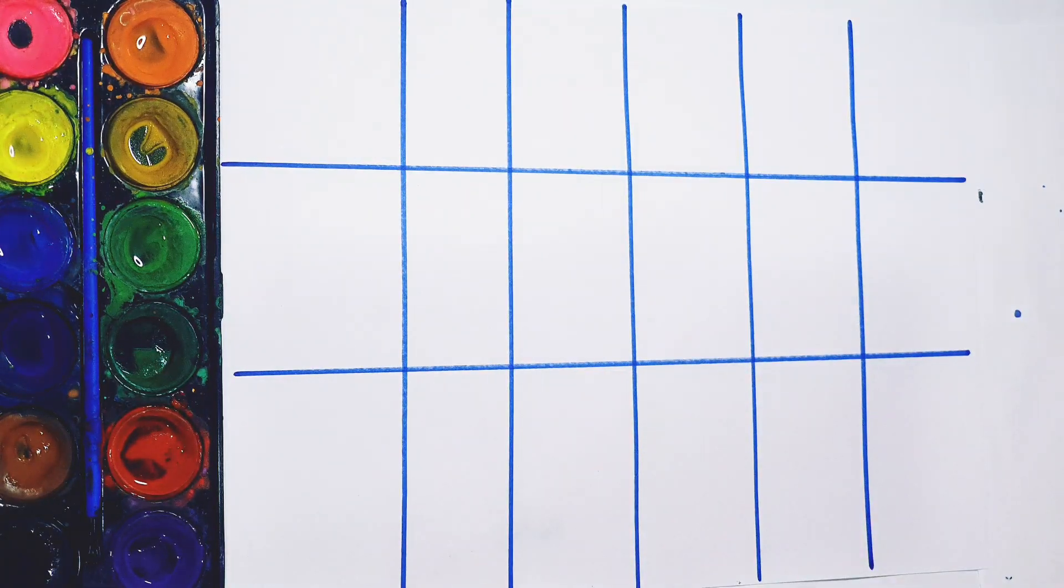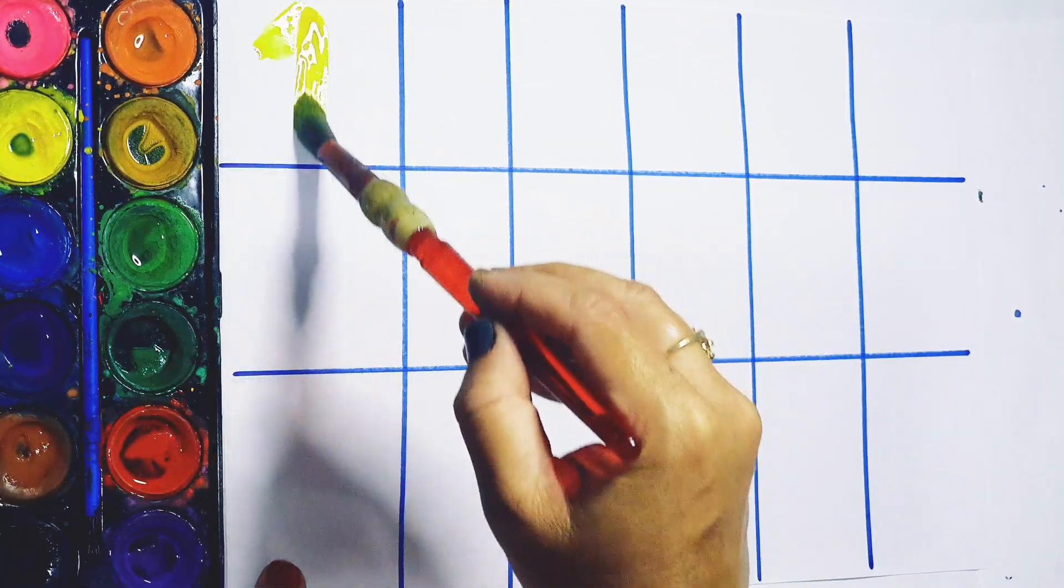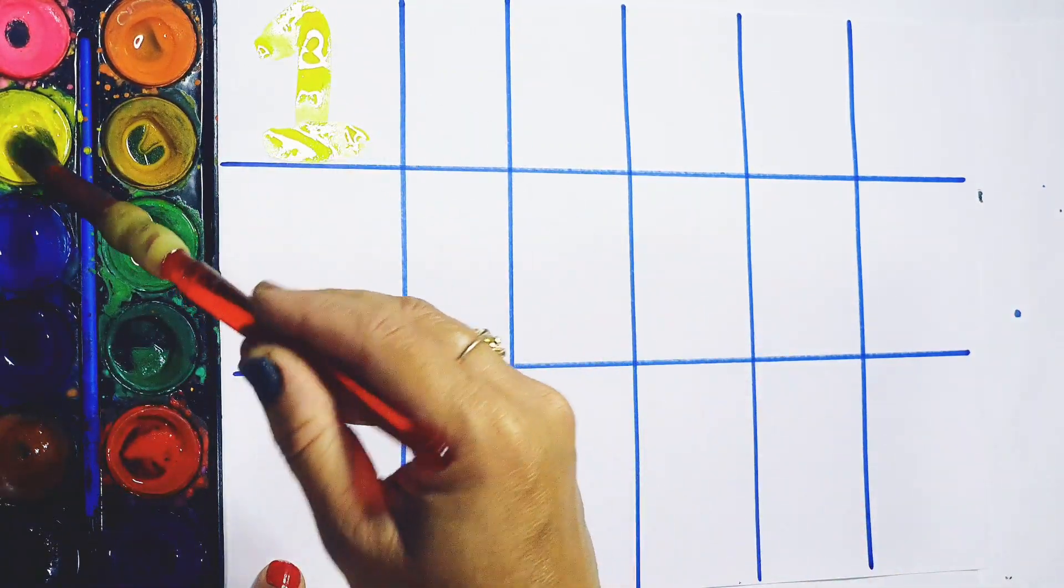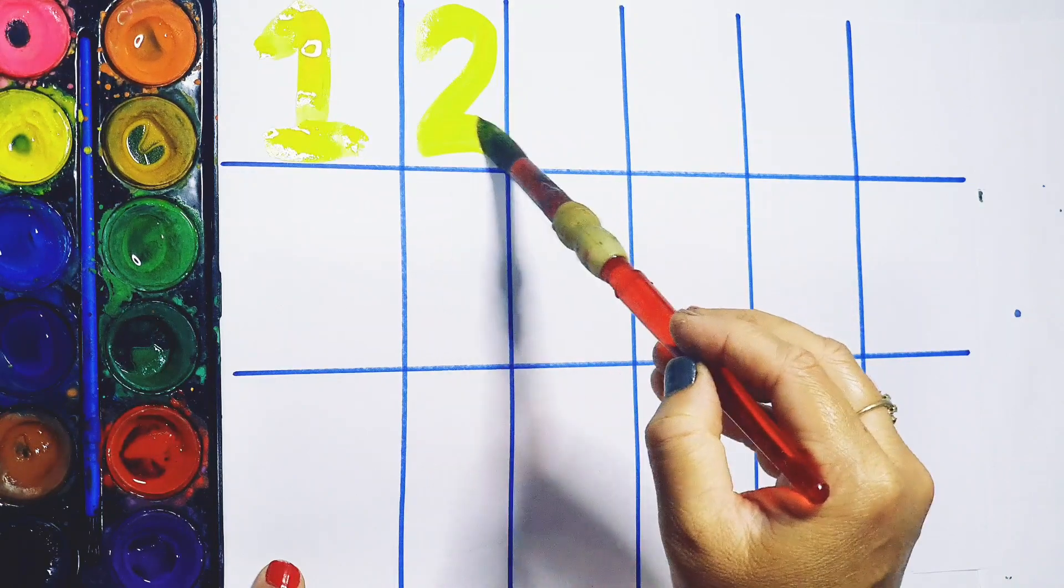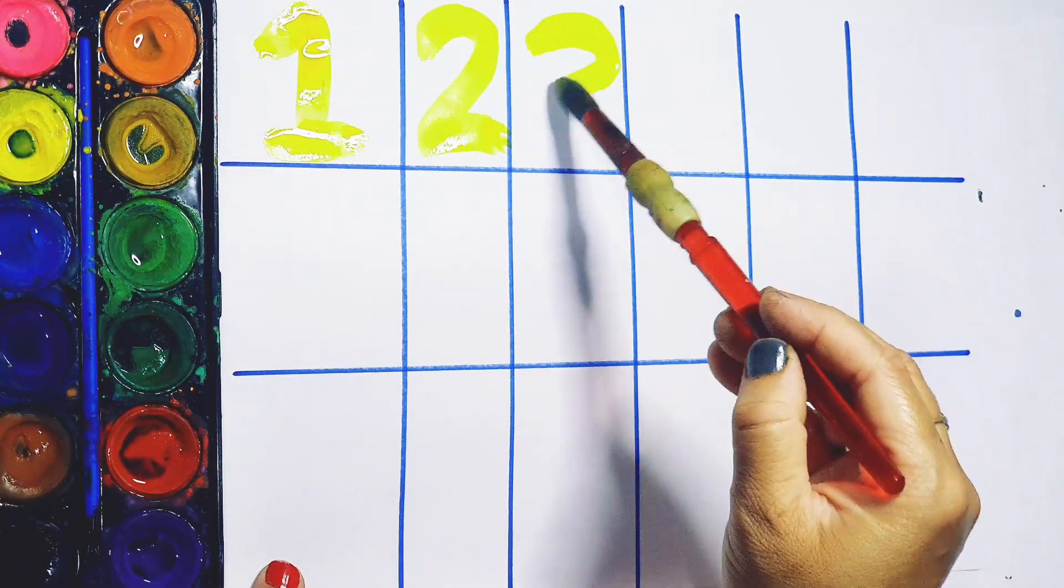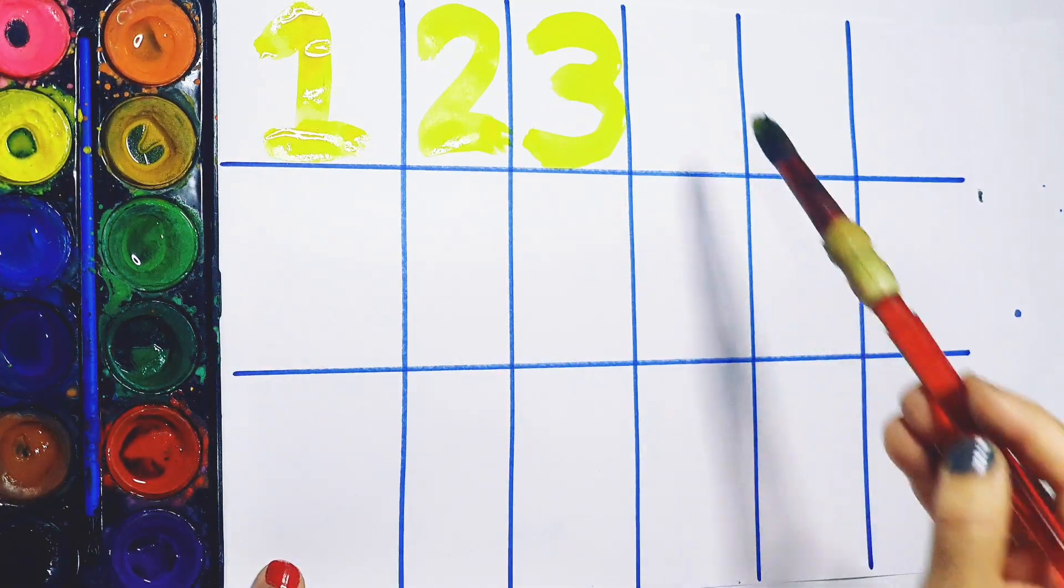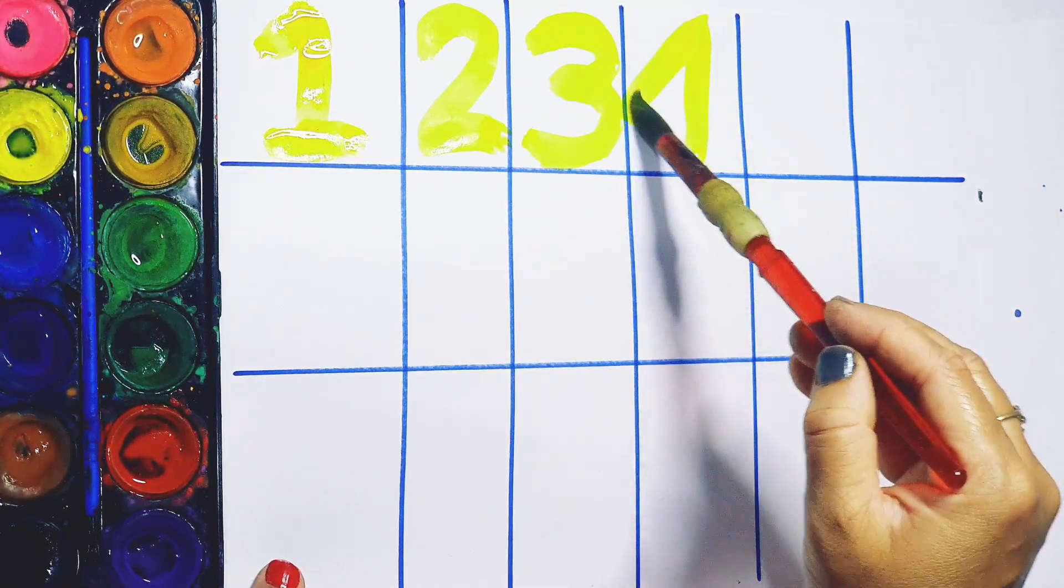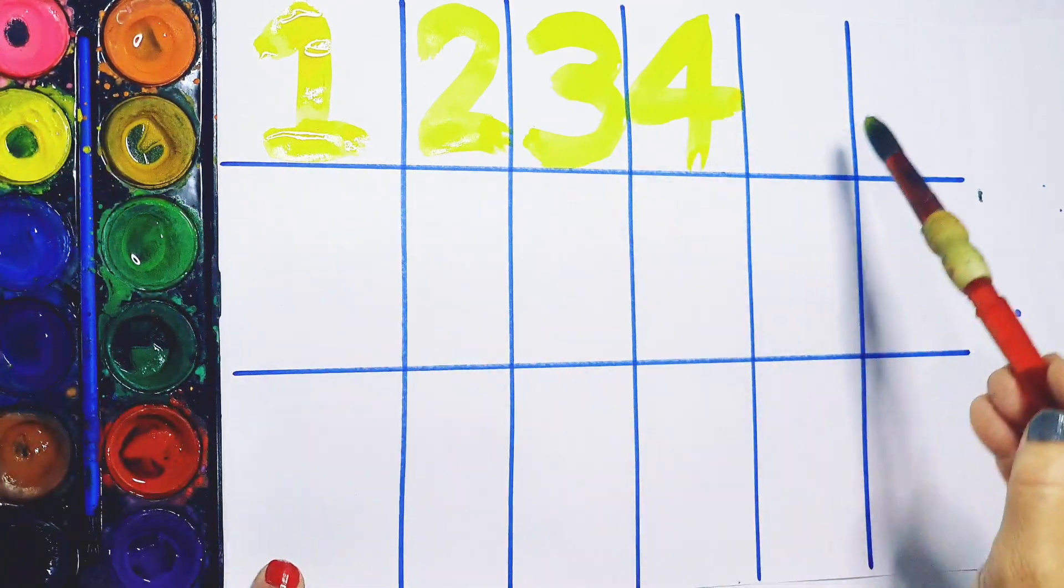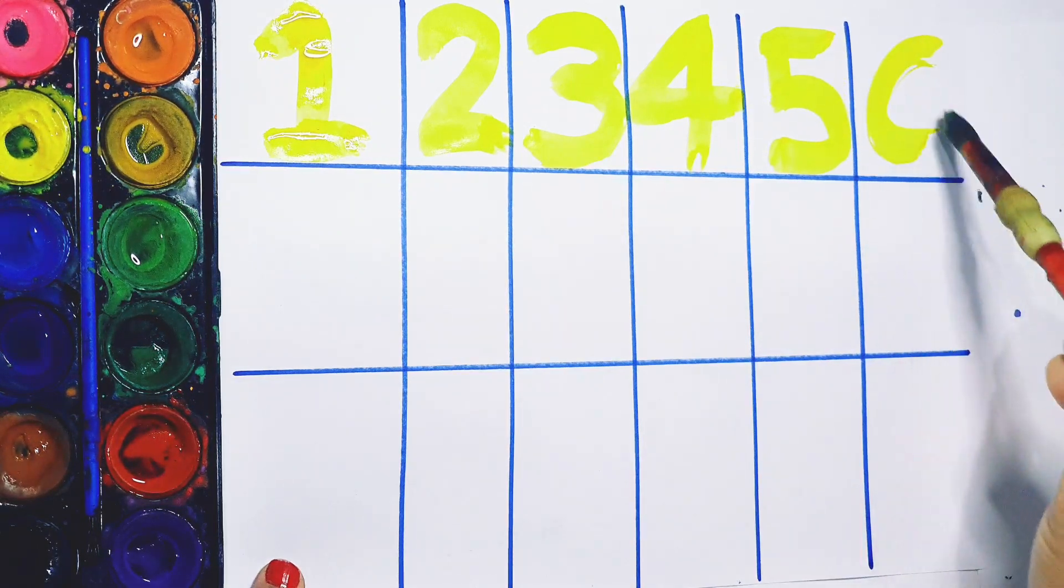Yellow color. 1, O-N-E, 1. 2, T-W-O, 2. 3, T-H-R-E-E, 3. 4, F-O-U-R, 4. 5, F-I-V-E, 5.